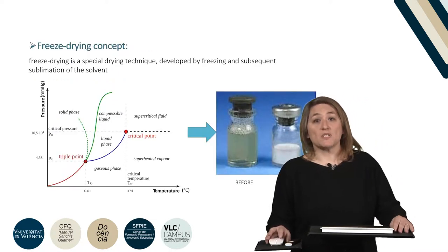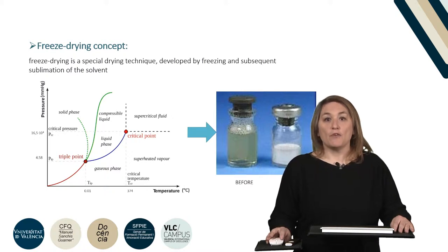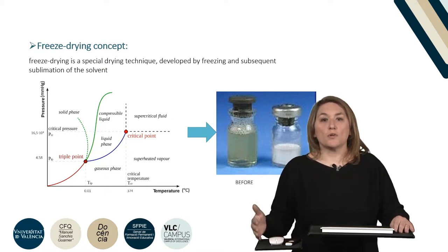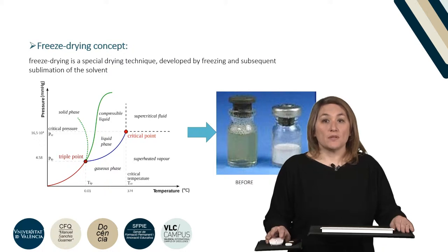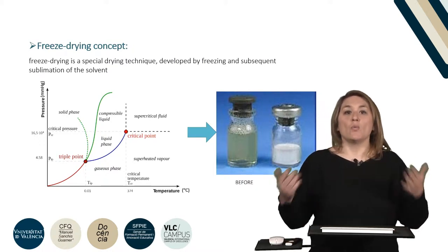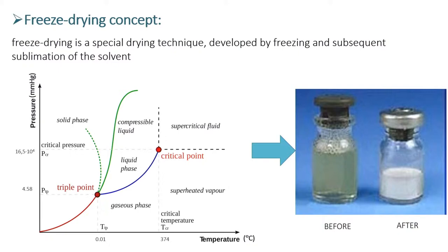Freeze drying is a special drying technique applied to a solution, freezing the solution and afterwards eliminating the solvent. This solvent, which in most cases is water, will undergo a process of sublimation in a vacuum environment — that means that ice will turn into a gas which will be subtracted from the chamber. The product obtained has a porous texture and lyophilic character, that is, it has a great affinity for water, which allows a fast and complete reconstitution to the initial product.